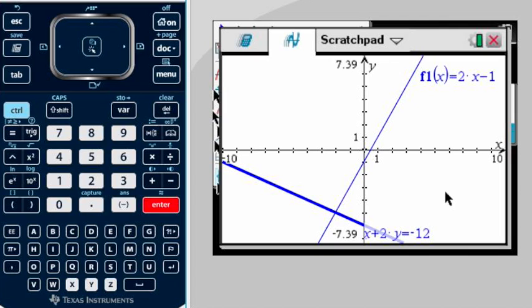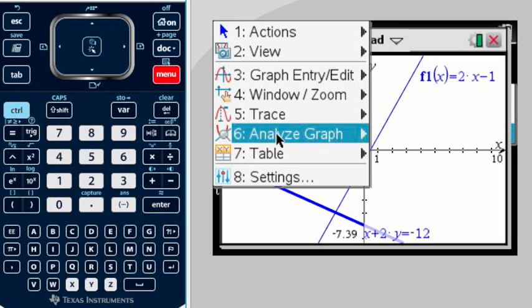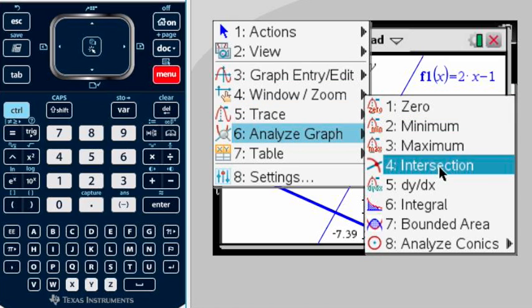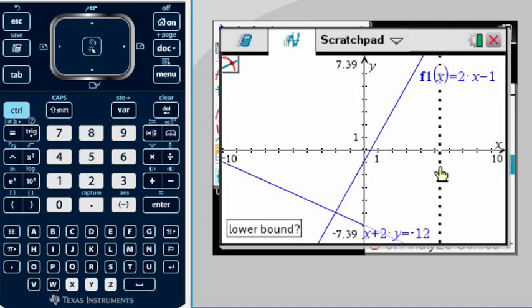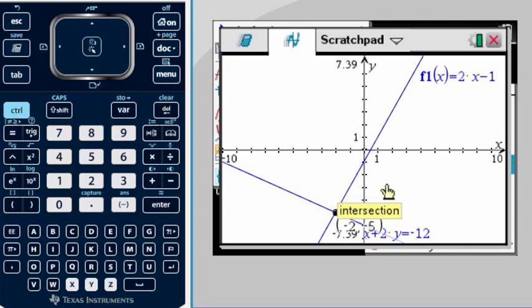For the calculator to give us the coordinates of this solution or intersection point, again we're going to go to Menu, Analyze Graph, and then Intersection. Remember you need to draw your box. You have to start from before, it doesn't matter how far or how close you are, as long as your intersection is inside this box.